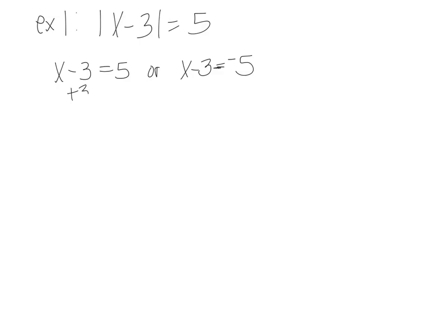Then I solve them, right? Because whatever's inside can equal positive five or negative five and they're both going to come out as five. So then I add three and x is eight. And I add three and x is negative two. And we're going to practice writing that 'or' between our two answers because it can't be both at the same time.